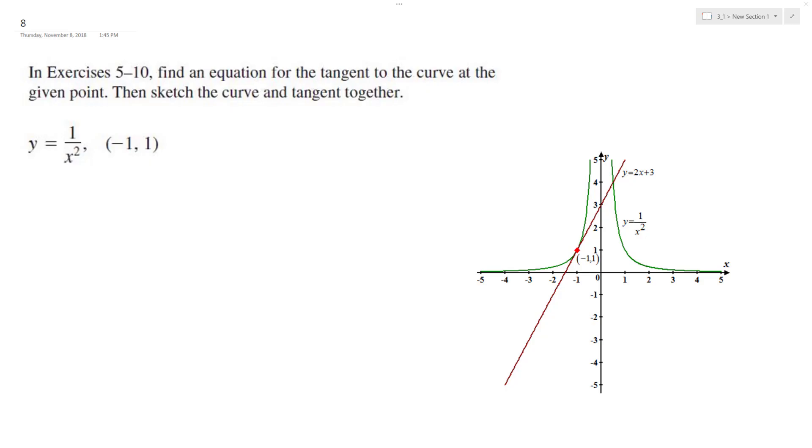So we've got the equation, we want to find the tangent line at negative 1 comma 1. I've already got the graph right here.